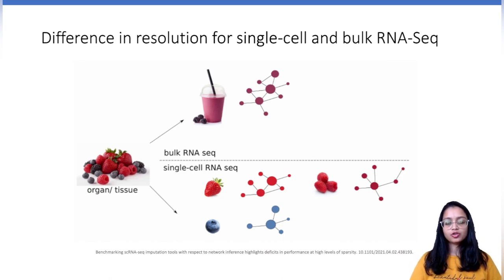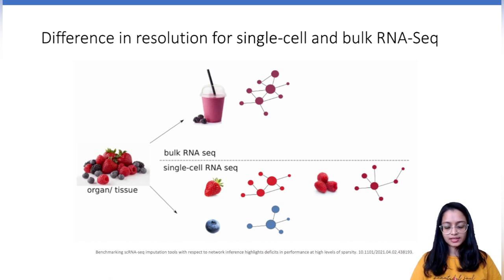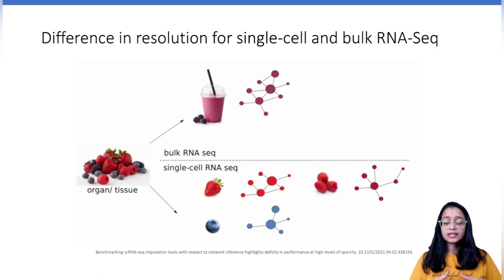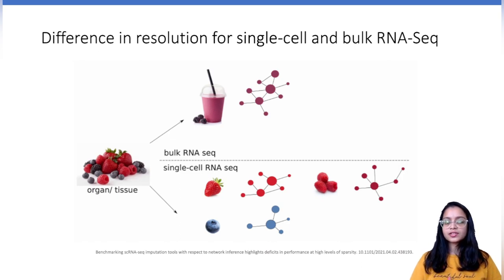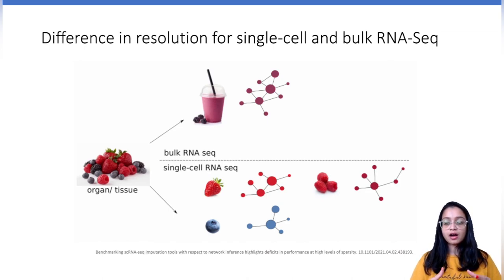The difference in resolution of each type of data can be leveraged to answer different questions. Let's say you have data from a group of patients who have lung cancer. You can utilize bulk RNA sequencing and compare the data from these patients with that of healthy individuals. This will provide an overview of the average differences in gene expression.